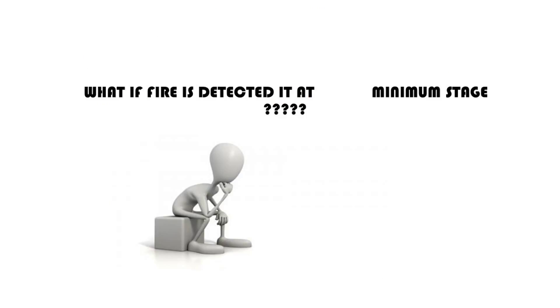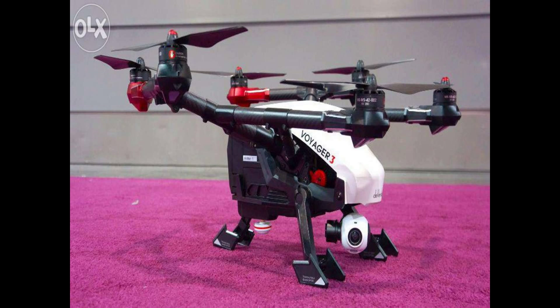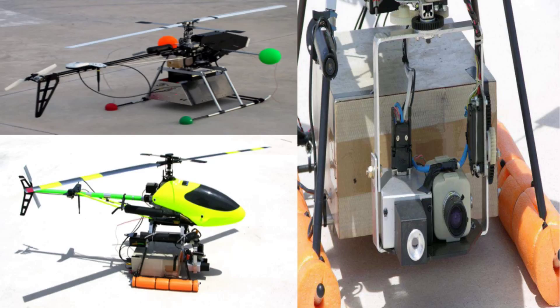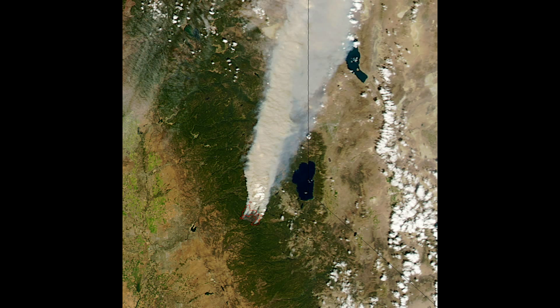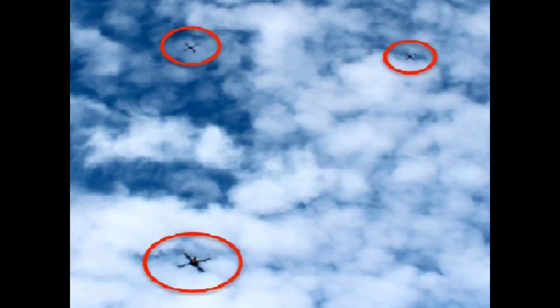What if the fire is monitored at a minimum stage? We have planned to use unmanned aerial vehicles, or fire-resistant drones, with cameras for visual monitoring of what is going on. Sensors with GPS will be used to get the exact location. We are going to use an optical smoke detection method to find the location of the smoke.